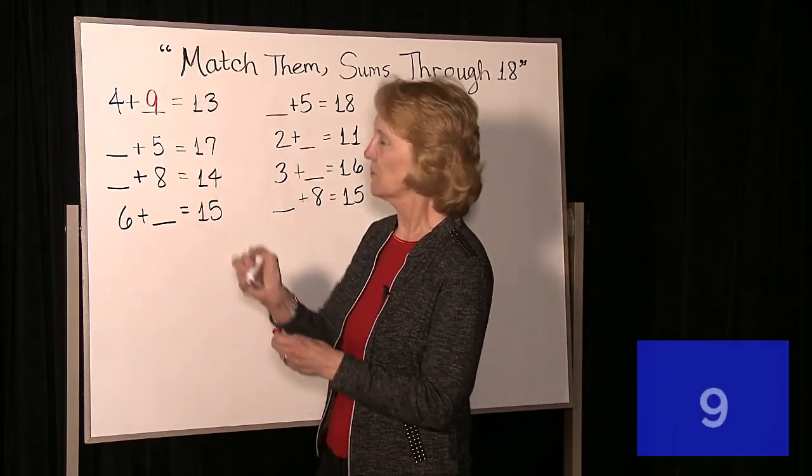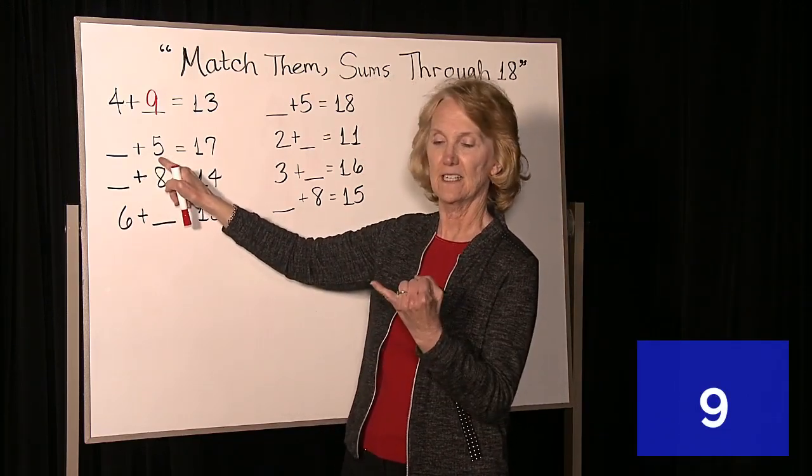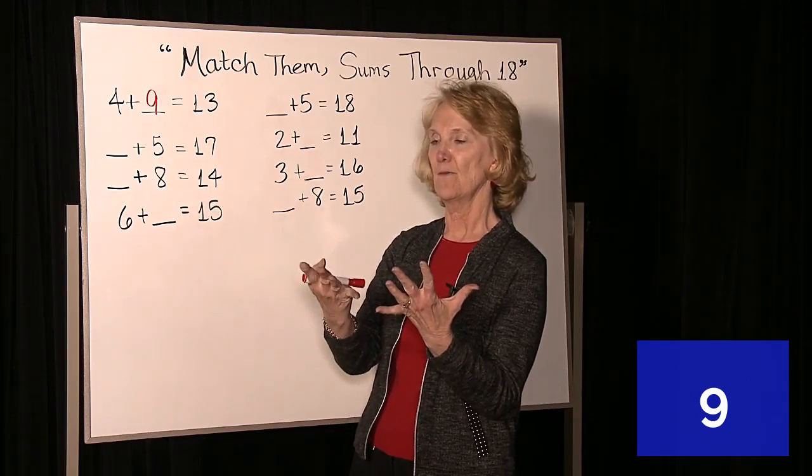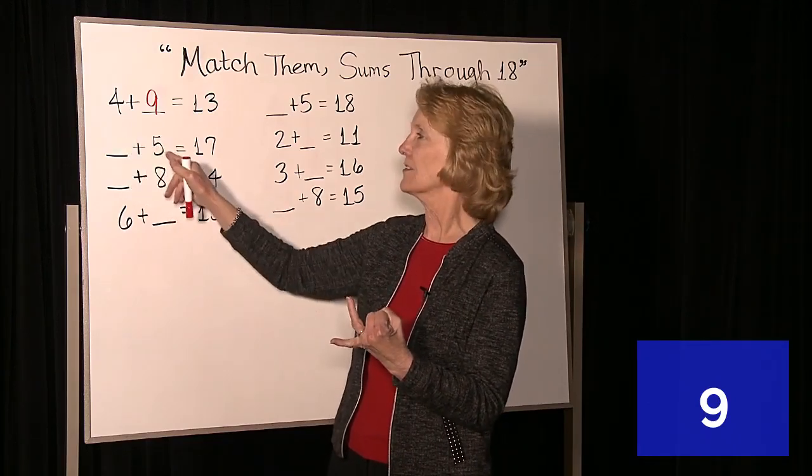Okay, on this one, something plus 5 makes 17. If we're at 5, we need 6, 7, 8, 9, 10, 11, 12, 13, 14, 15, 16, 17. That's 12. That's too big.